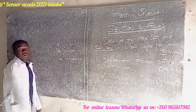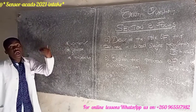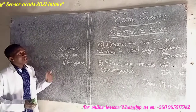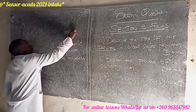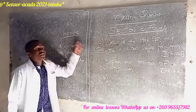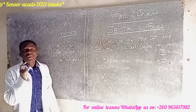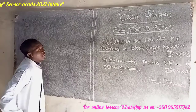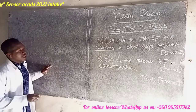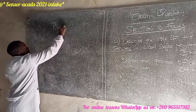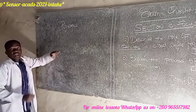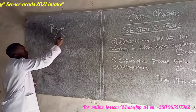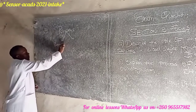Our focus is on osmoregulation and blood sugar regulation. Homeostasis involves the work of hormones. A hormone is a chemical substance produced by ductless glands, transported by blood to the targeted organs. Now, the pancreas is a gland that can secrete both hormones and enzymes at the same time.